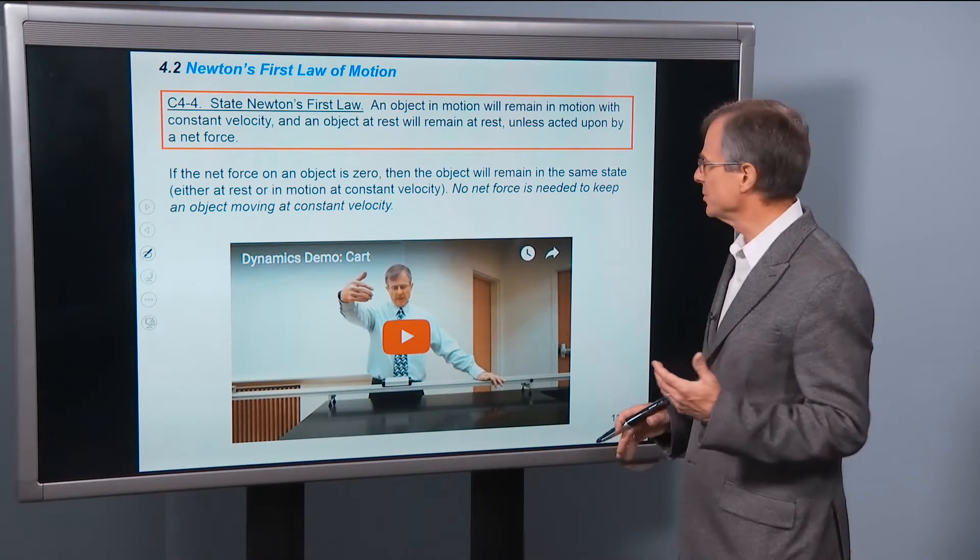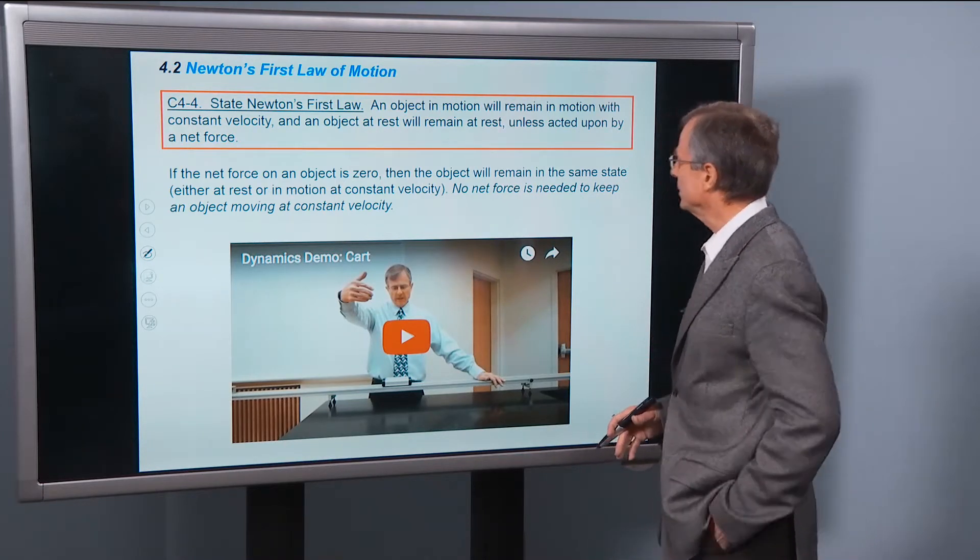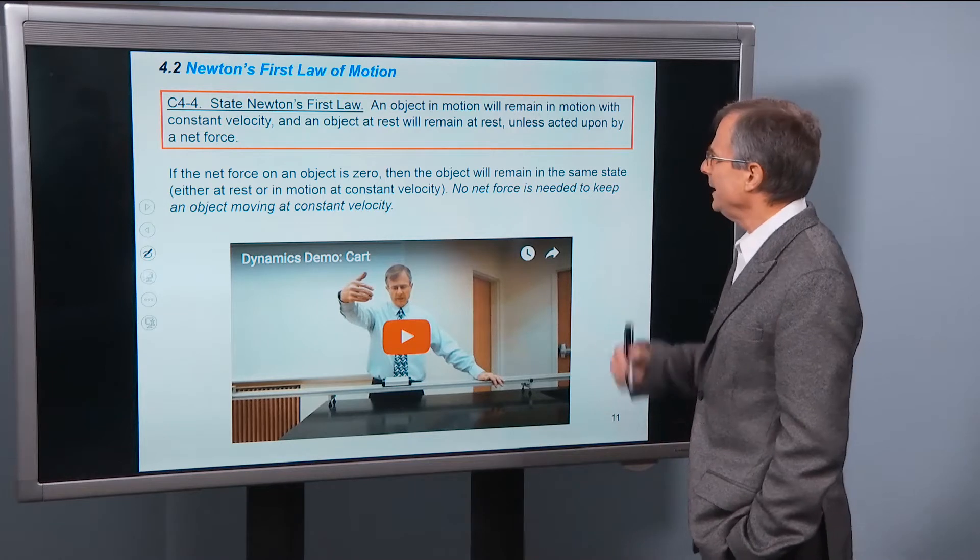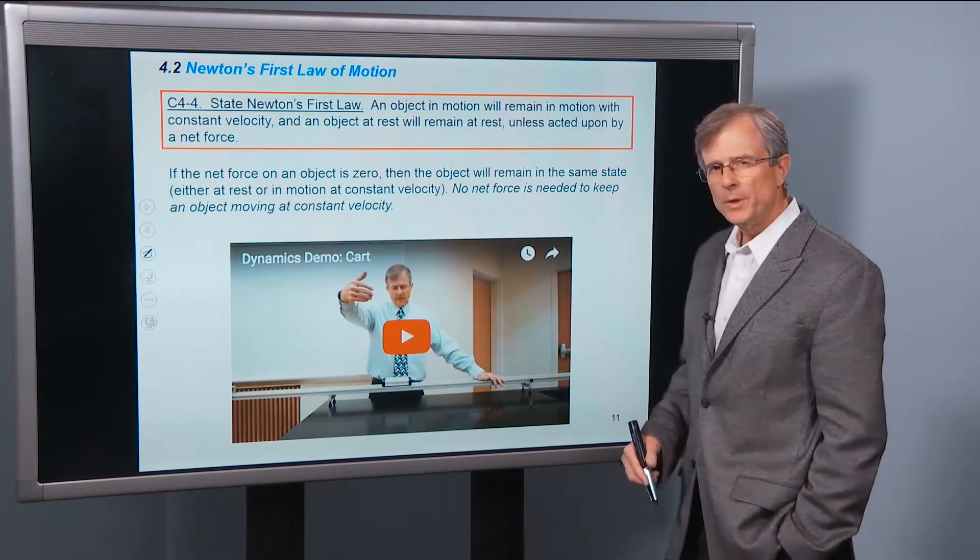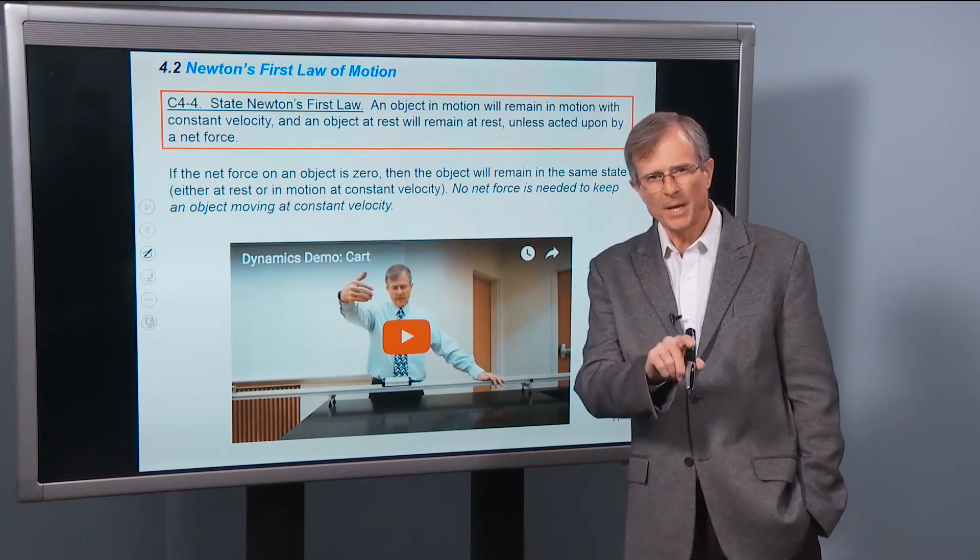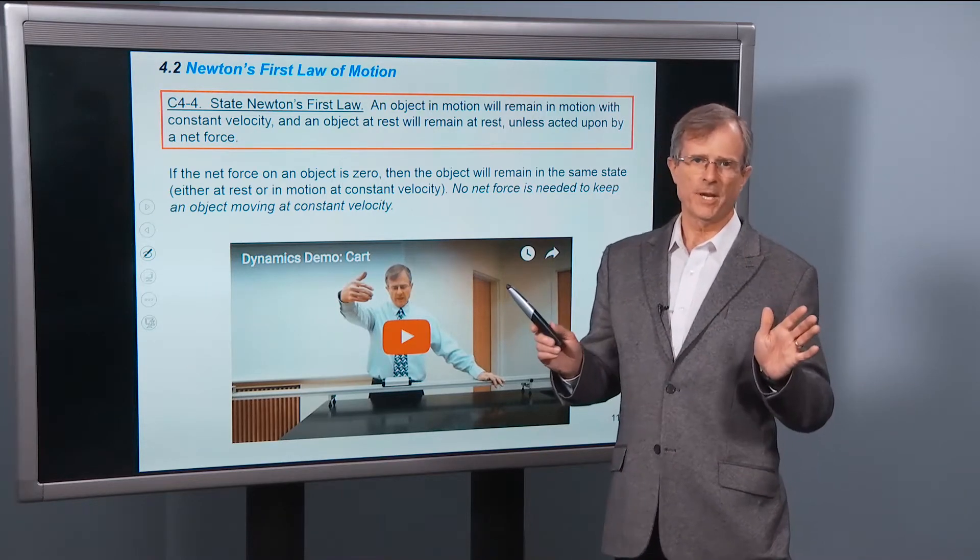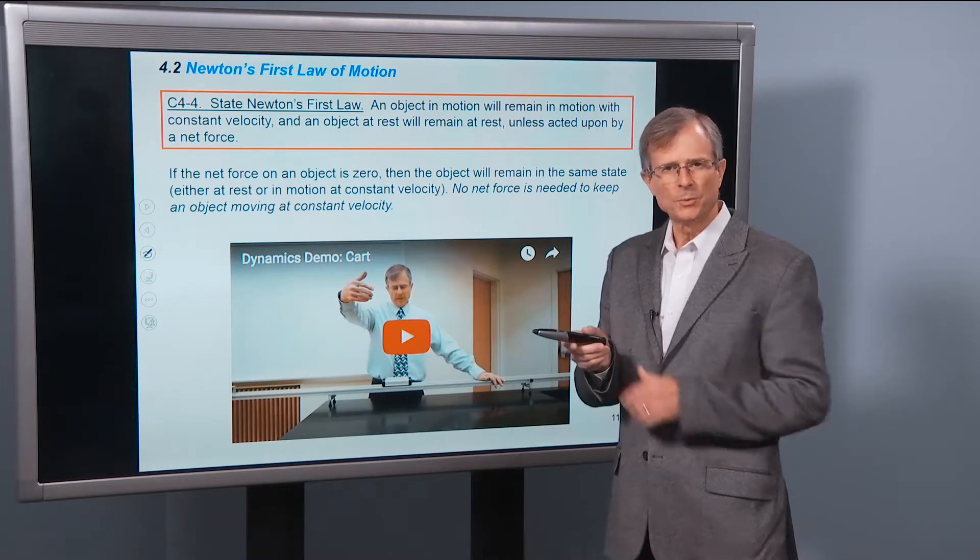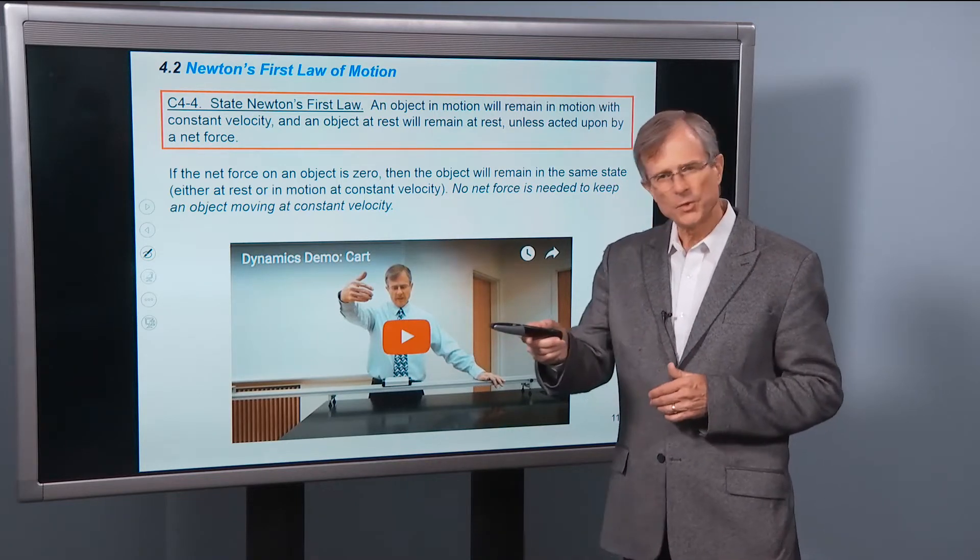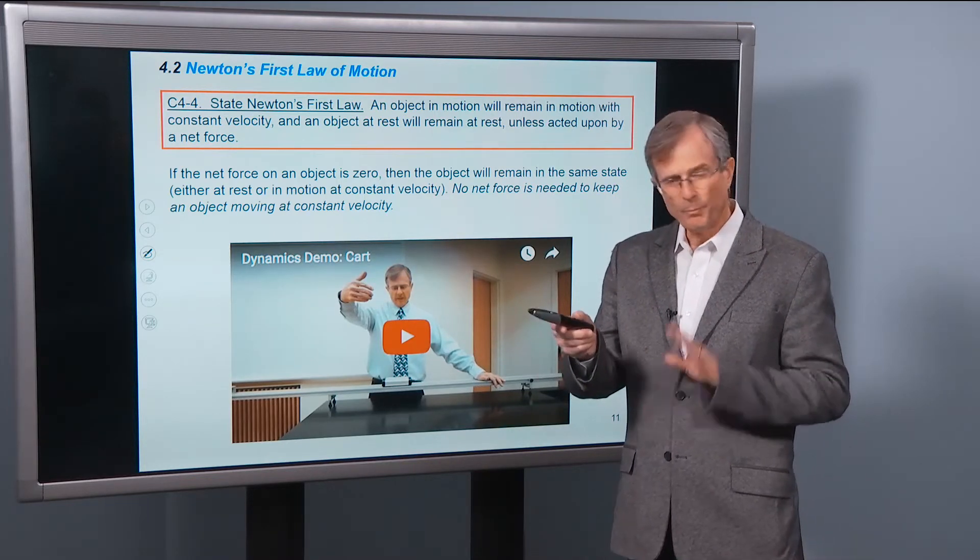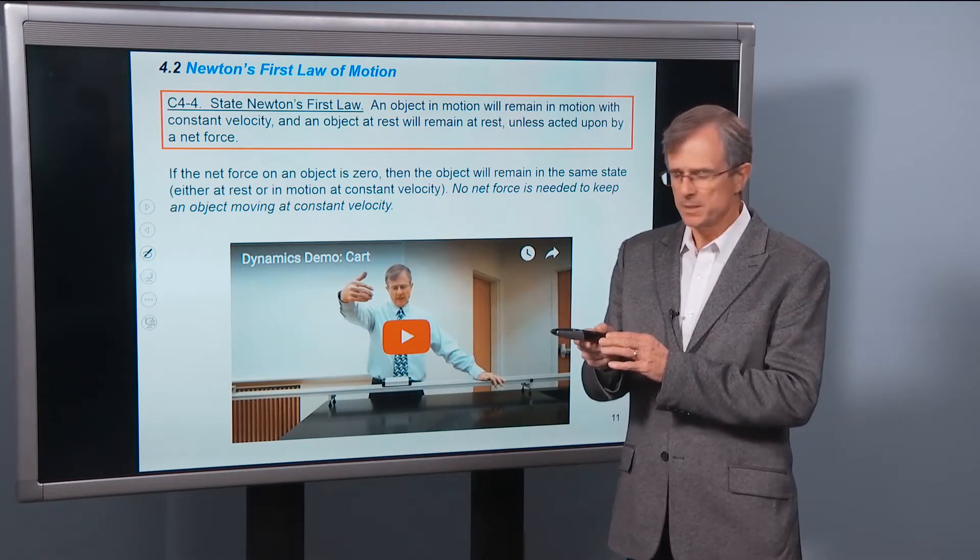So each word matters in this definition, in the statement of Newton's first law. An object in motion will remain in motion with a constant velocity. Let me remind ourselves what constant velocity is. Velocity is a vector. It has a magnitude, which is the speed, and it has a direction. Both of those have to be constant, for the velocity to be constant.